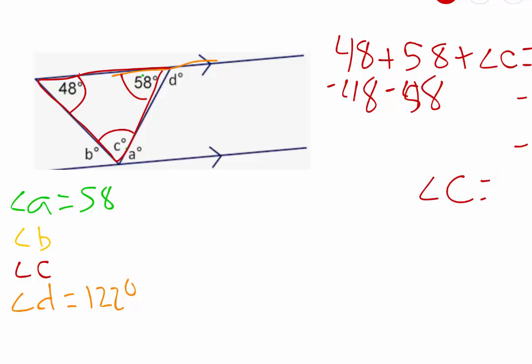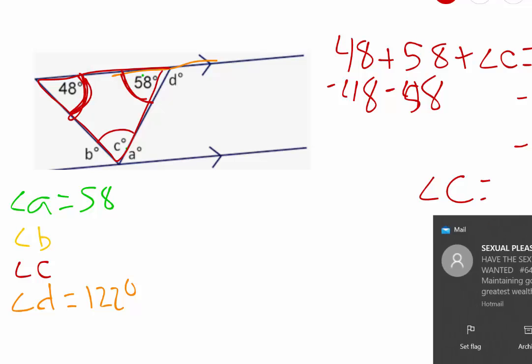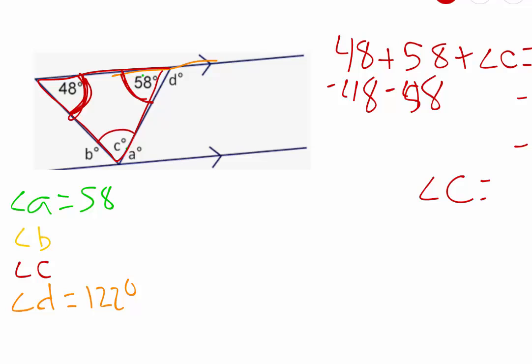180 minus this angle minus this angle should give us what is left over. So if we do that math, 180 minus 48 minus 58 gives us 74 degrees for angle C.